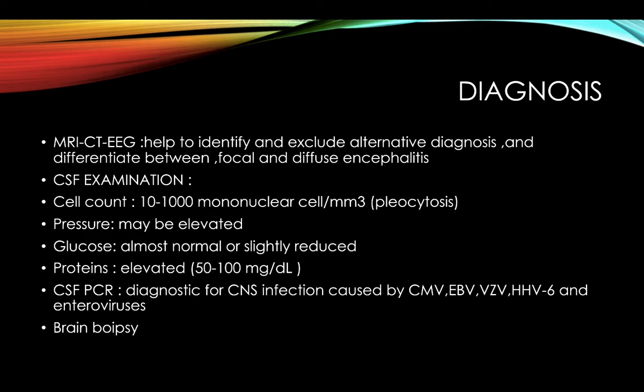Diagnosis: CT scan and EEG are used to determine if involvement is focal or diffuse. CSF examination is the gold standard for diagnosis — it shows pleocytosis with lymphocytes, raised CSF pressure, raised protein, and relatively normal glucose compared to meningitis. CSF PCR identifies the organism.